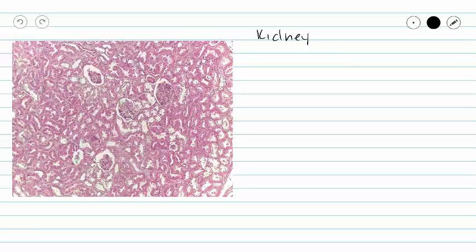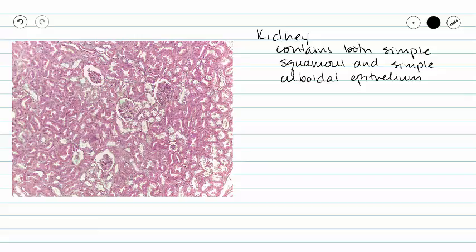In our last video, when we looked at simple squamous epithelium, we started in the kidney, which contained both simple squamous and simple cuboidal epithelium. Remember, our simple squamous epithelium was going to be found surrounding our glomerular capsule, or creating our glomerular capsule in these areas of our slide.